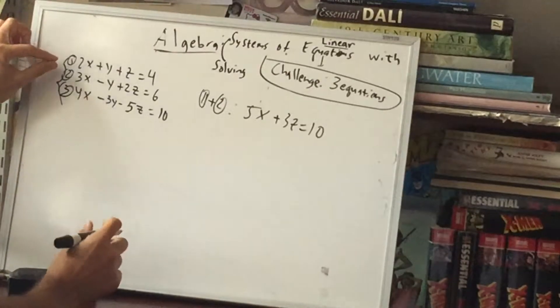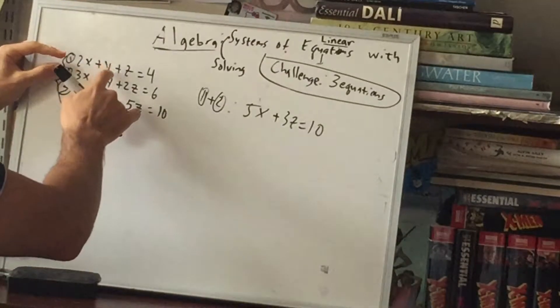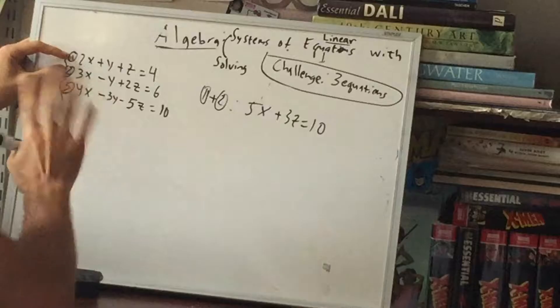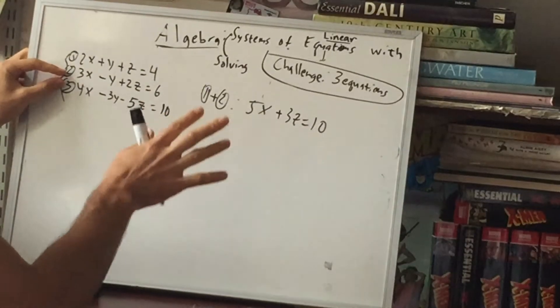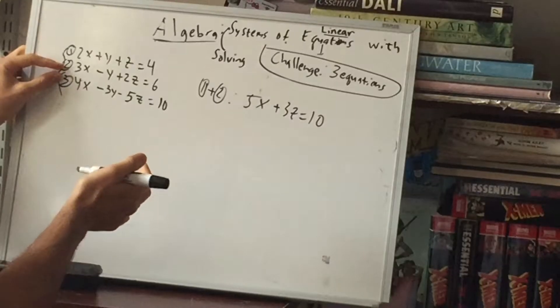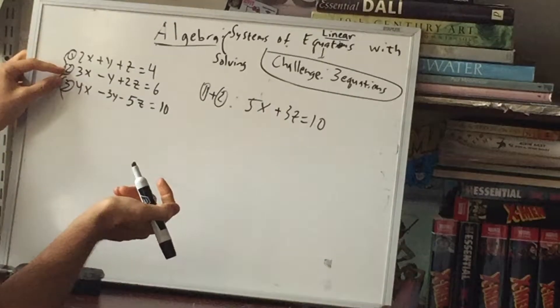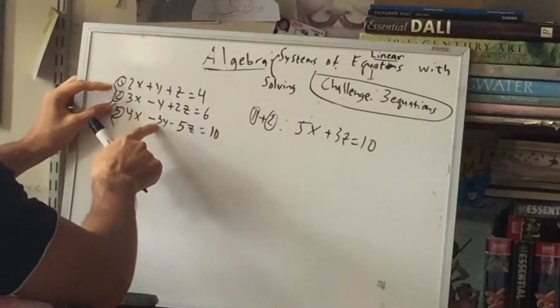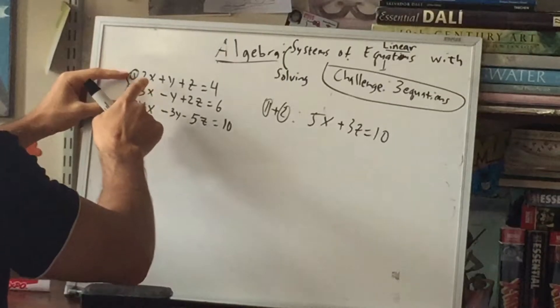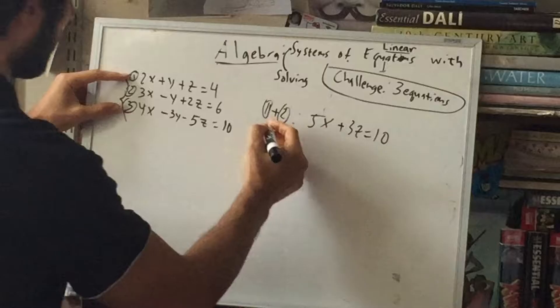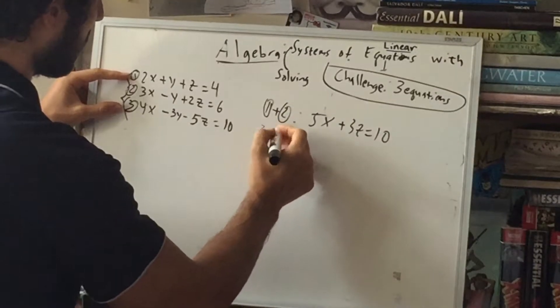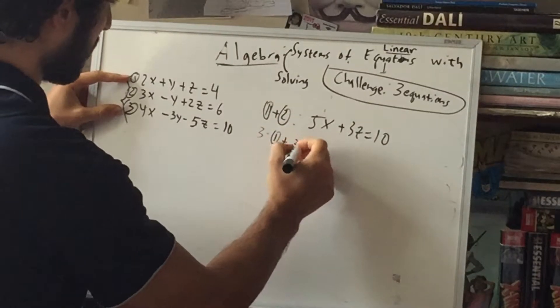But we're going to do this again. And this time, instead of eliminating y from these two, we'll pick any other two. So that means you can pick either 1 and 3 or 2 and 3. It doesn't matter. So let's see which one we'd rather do. Since that's a positive, that's a negative, why don't we pick 1 and 3? But first, we're going to have to scale this to be a 3 so that the 3 is canceled. So we're going to triple equation one and then add equation three.